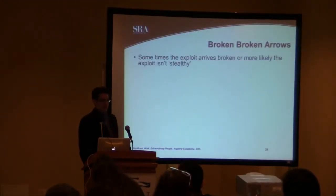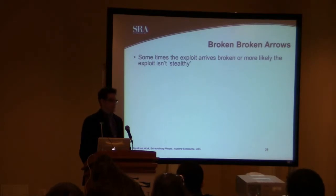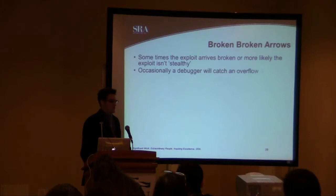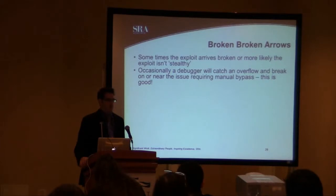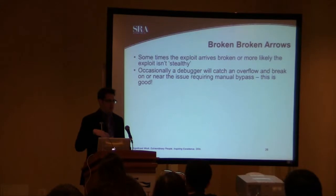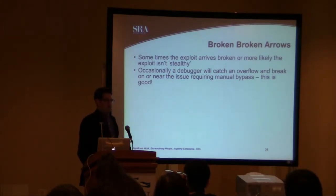Broken broken arrows are more of the easier ones to deal with. Sometimes the exploit arrives broken and isn't exact, or it isn't very stealthy. Occasionally a debugger will catch an overflow occur and break on or near the issue requiring manual bypass. So you can run — let's say it was an Internet Explorer HTML page that instantiated an ActiveX COM object and it broke — you could just run Internet Explorer in the debugger and it'll actually show you where the overflow occurs or near where the overflow occurs.